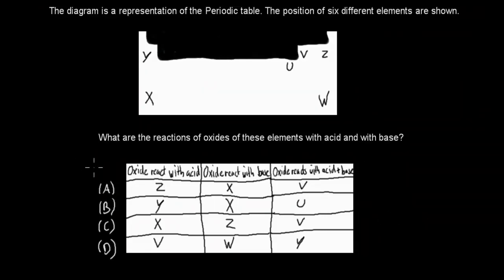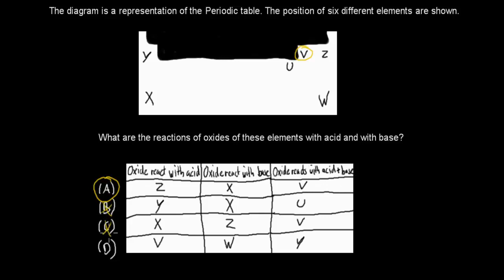Welcome back. The correct answer is A. Non-metals react with acids, and metals react with bases. X is a metal, so its oxide reacts with bases. V is an amphoteric species — it can act both as an acid and as a base — so it can react with both acids and bases. Therefore A is correct and all other combinations are wrong.